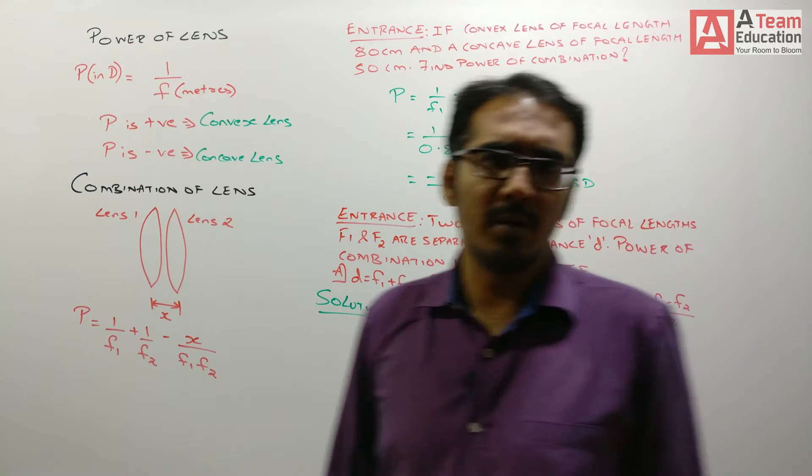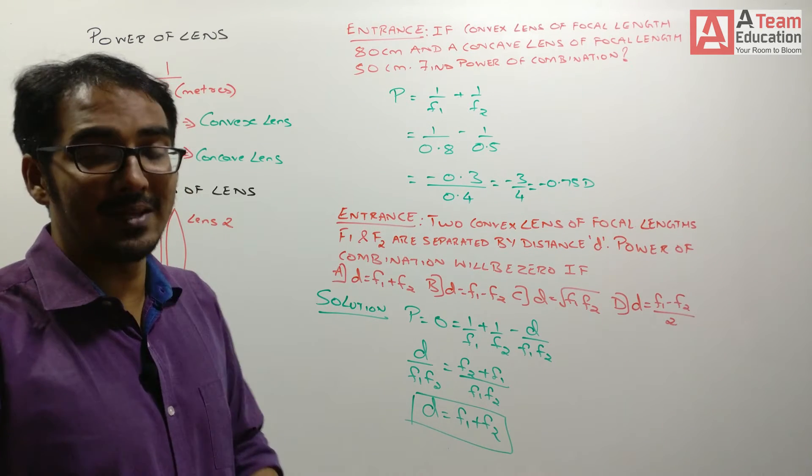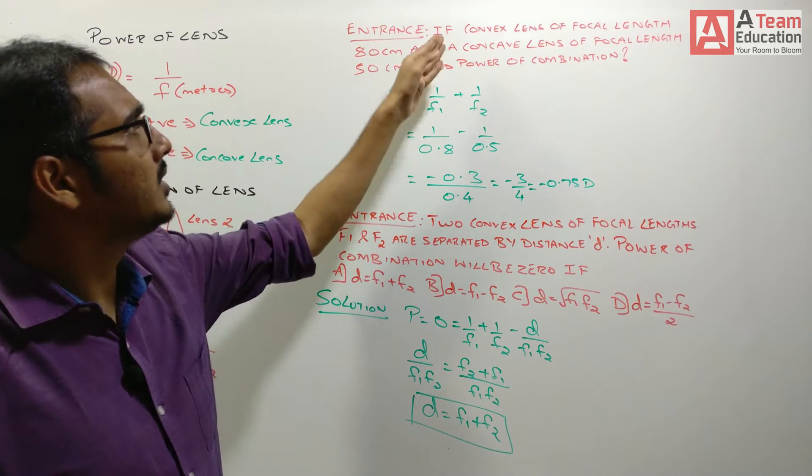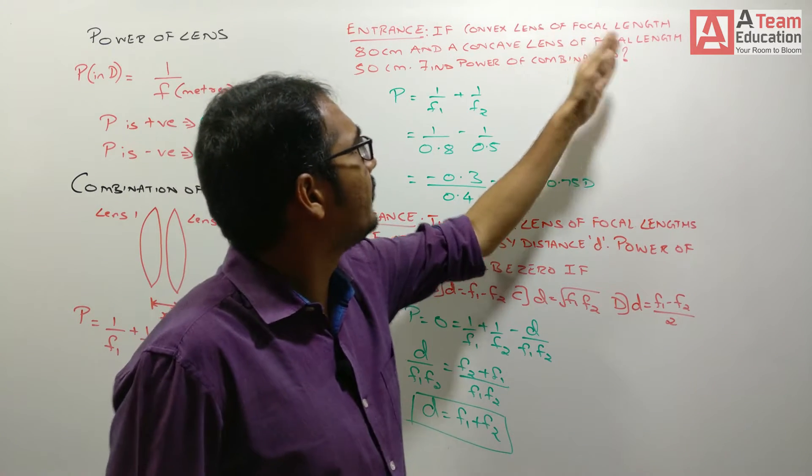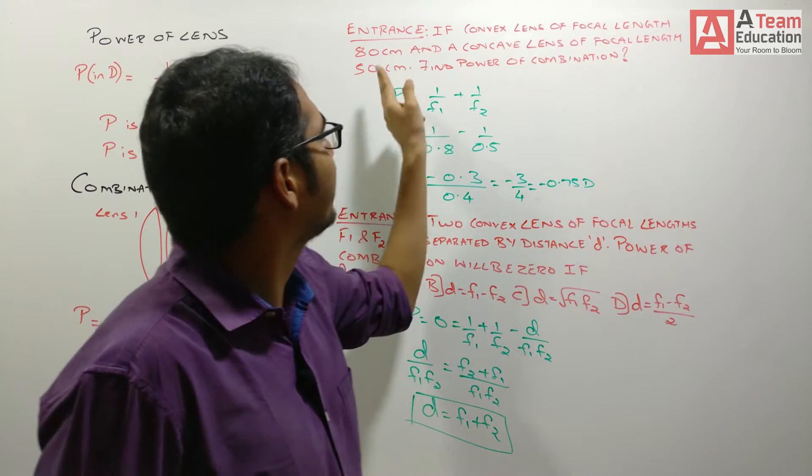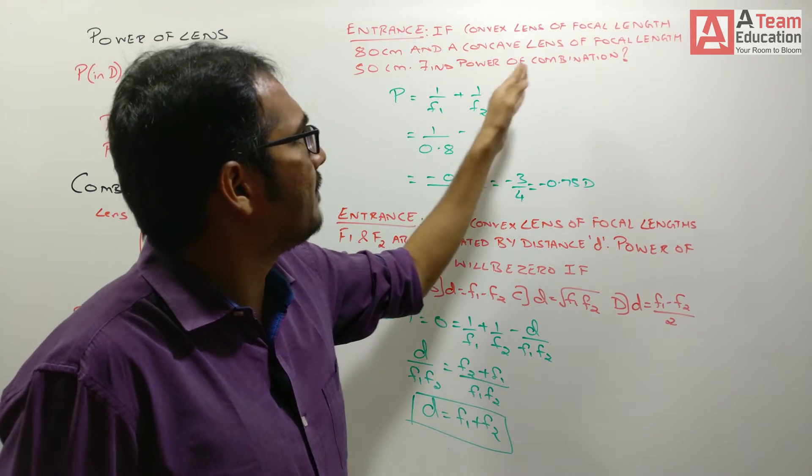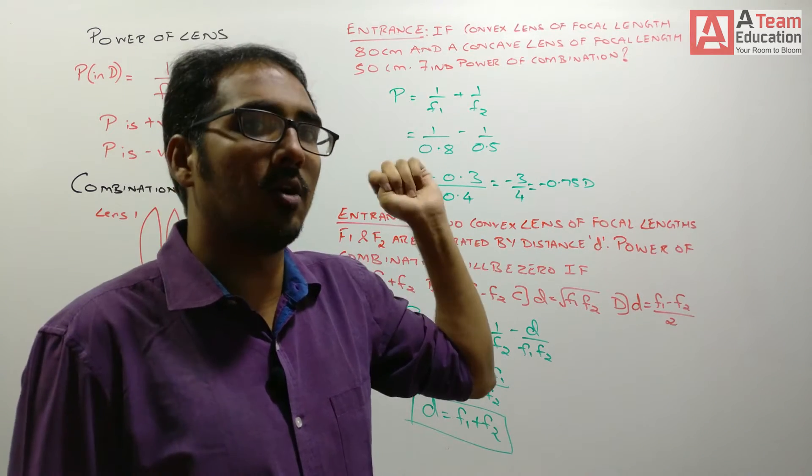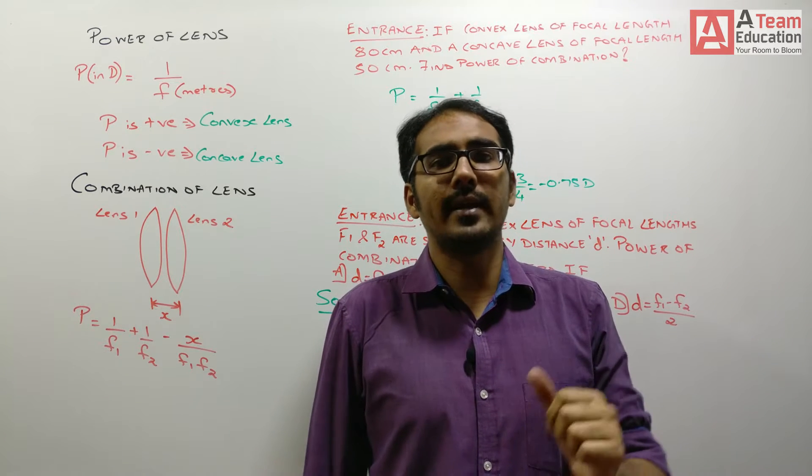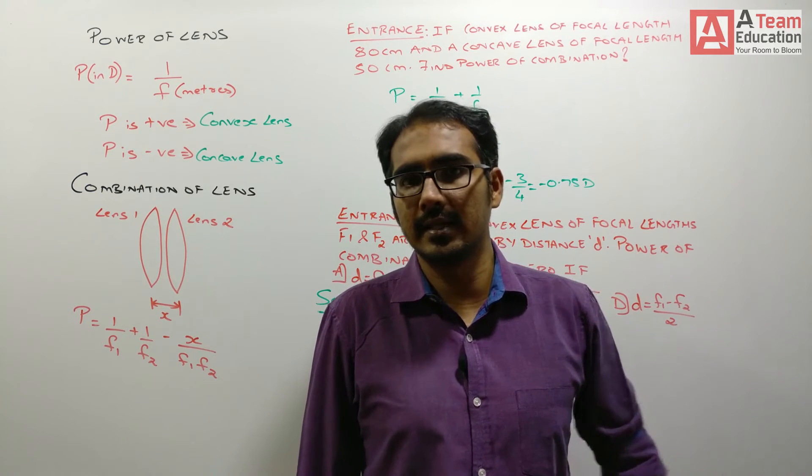Let us see entrance based problems that have been asked in your CT based entrance exams. Let me read out the question. If convex lens of focal length 80 cm and a concave lens of focal length 50 cm is placed in combination, find the power of combination. You can take a pause over here and try to solve this question on your own and then we will discuss the answer.